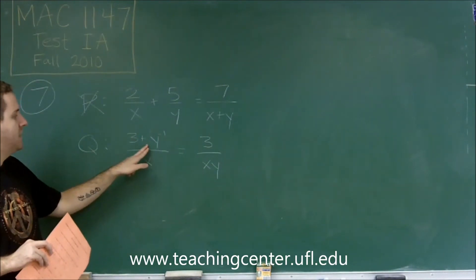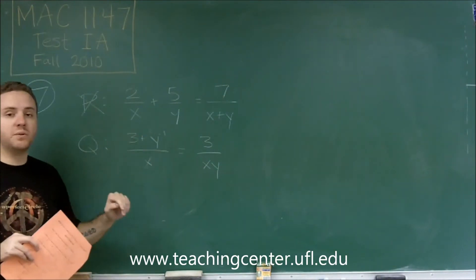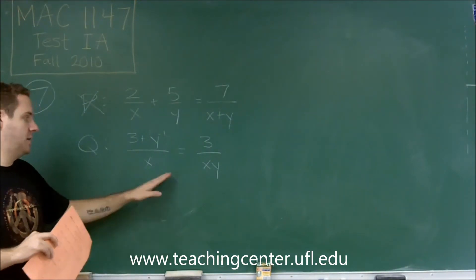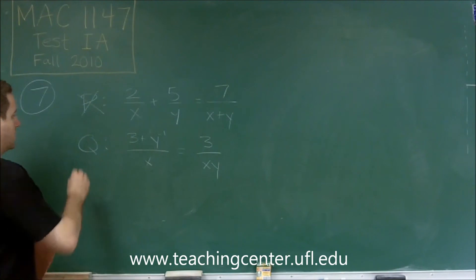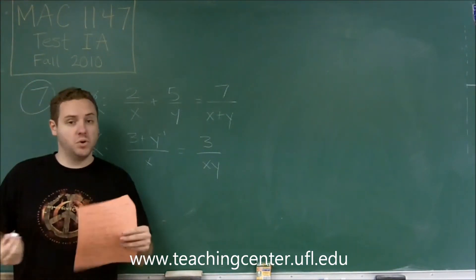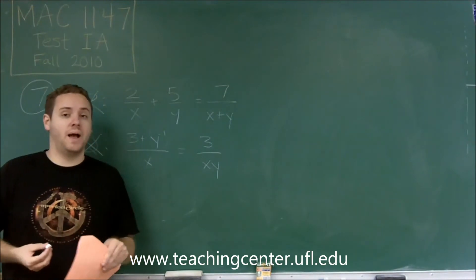However, this is plus meaning you have 3 plus 1 over y. And again, to combine those two, you have to get a common denominator. You can't just do this. So Q is incorrect. So really we're testing that you know you need to get a common denominator whenever you add fractions.